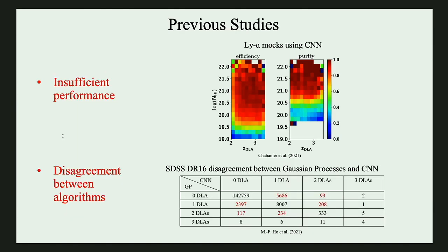People have adapted many machine learning algorithms to detect DLAs. However, they have some limitations. As seen from the upper plot, the previous algorithm working on Lyman-Alpha mocks shows that the purity and efficiency for most data samples are below 95%, especially for DLAs with low column densities. This means that the algorithm fails to detect a large amount of DLAs. There also exists disagreement between different algorithms — for the same SDSS DR16 data release, the Gaussian processes and the CNNs fail to establish the same DLA catalog, making it very hard to trust the detected catalog.